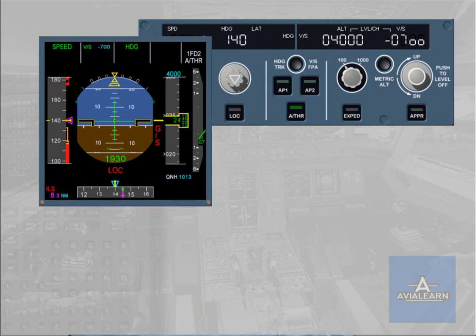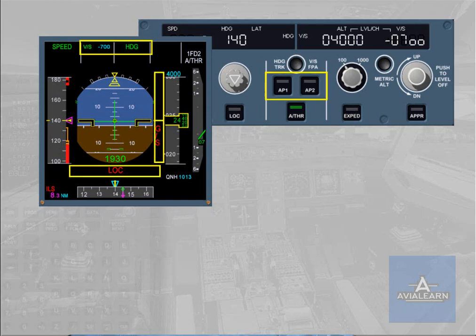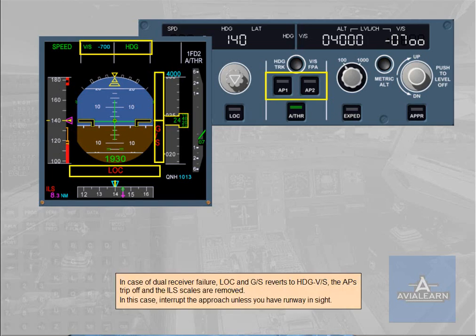In case of dual receiver failure, LOC and glide slope revert to heading and vertical speed. The APs trip off and the ILS scales are removed. In this case, interrupt the approach unless you have the runway in sight.